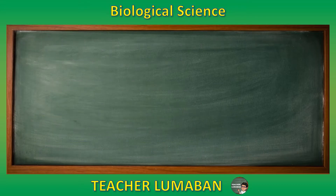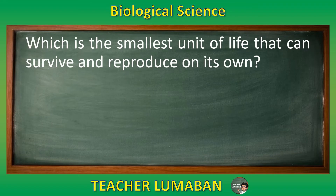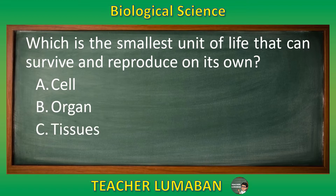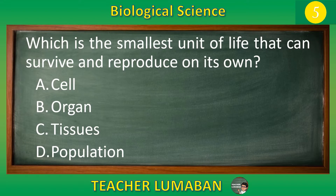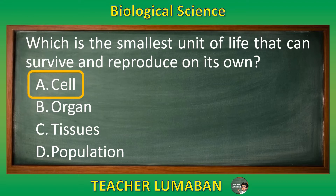Which is the smallest unit of life that can survive and reproduce on its own? Letter A: Cell. Letter B: Organ. Letter C: Tissues. Letter D: Population. The correct answer is letter A — cell. The cell is the smallest unit of life that can survive and reproduce on its own.